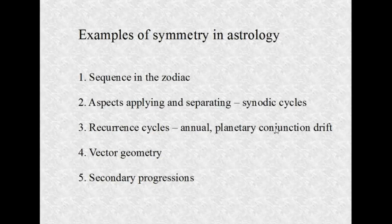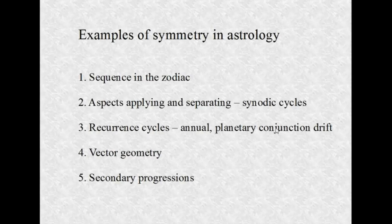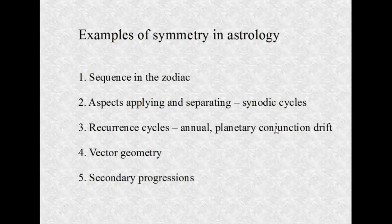You can see symmetry in the idea of aspects applying and separating. In synodic cycles you have orbs — for example, an orb of 10 degrees means 10 degrees before a point and 10 degrees after. There's a certain symmetry there. It's been my observation that the orb of a Saturn transit is weighted on the far end, whereas the orb of a Mars transit is weighted on the front end. But for the most part, there's a kind of symmetry. Synodic cycles display a certain amount of symmetry.